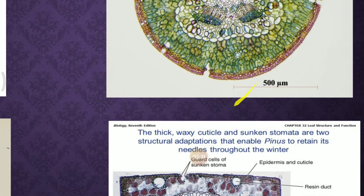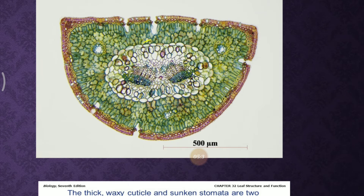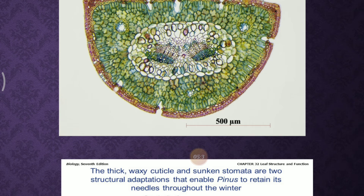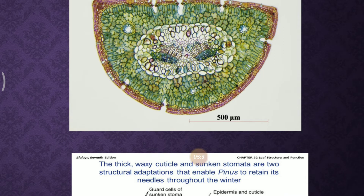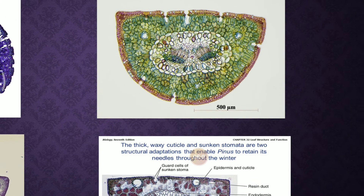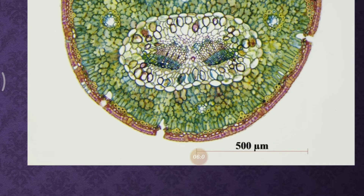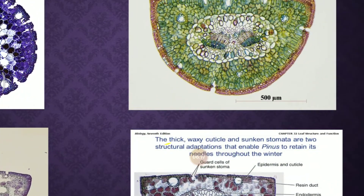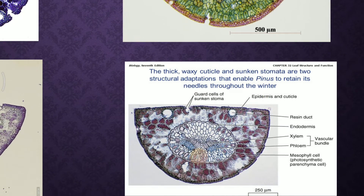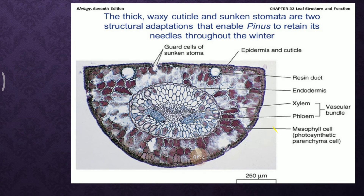In another picture taken here, the sunken stomata are very clear on the upper and lower surfaces of the needle. The mesophyll lies below the hypodermis and is not differentiated into palisade parenchyma and spongy tissue — the green area is completely filled and undifferentiated. A T-shaped structure can also be seen, and the thick waxy cuticle with sunken stomata enables Pinus to retain its needle throughout the winter.